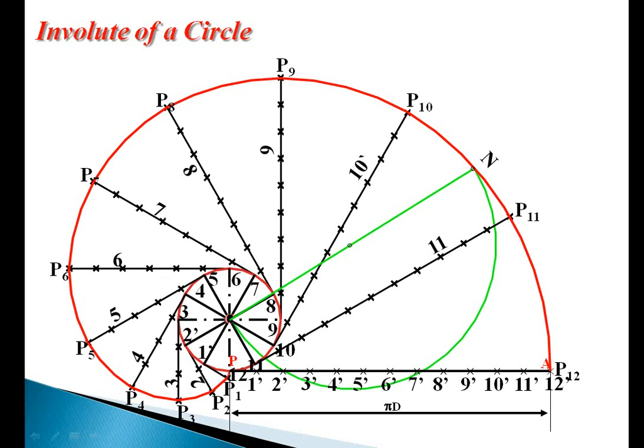This semicircle touches the circle at point n. Now we join Nn. That is our required normal. Now draw a tangent perpendicular to Nn. That is our required tangent.